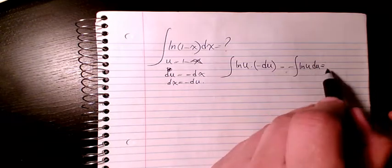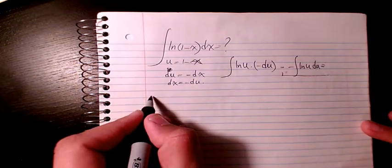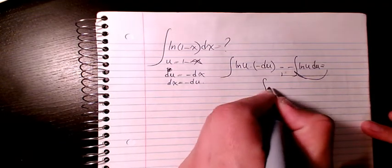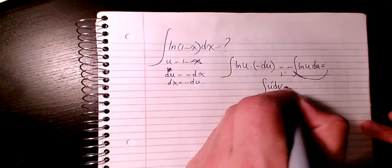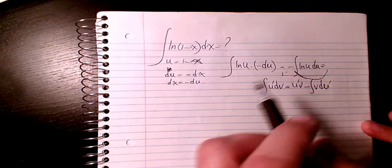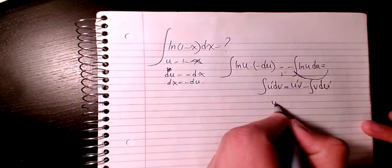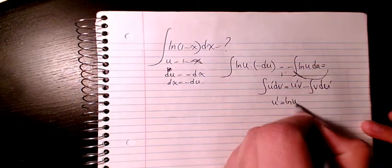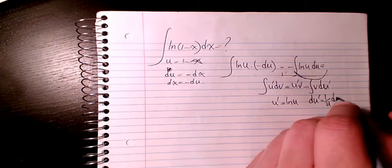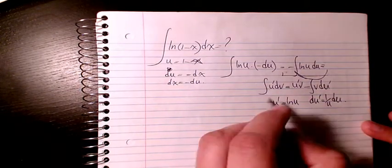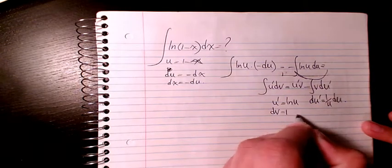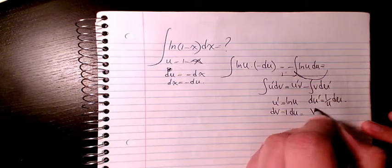Then in order to solve this I need to use integration by parts. So I will consider u prime times v minus integral of v du prime. The u prime is ln(u), so du prime will be 1 over u du. And on the other hand, dv is 1 du, so v will be just u.